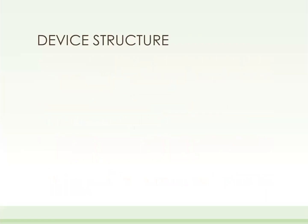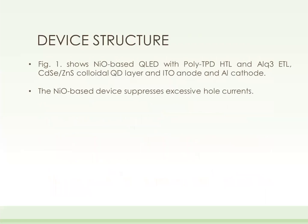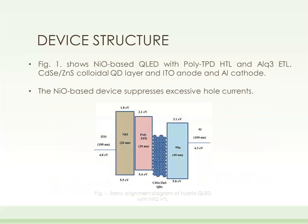Now coming to the structure of the device under study. Figure 1 shows the NiO-based QLED where NiO and QPVK form a dual hole transport layer each of 20 nanometers, 20 nanometers of CdSe/ZnS QD layer, and 40 nanometers of ALQ3 ETL sandwiched between ITO anode and aluminum cathode.